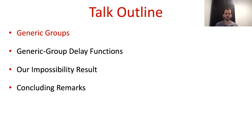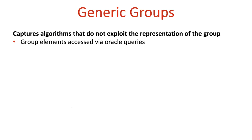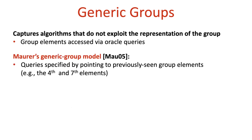So let's begin by discussing the generic group model. Roughly speaking, the generic group model captures algorithms that do not exploit the representation of the underlying group in any way. This is captured via an oracle that manages the access of algorithms to the group. Concretely, we use the generic group model of Maurer. In this model, group elements do not have unique explicit representations, and instead algorithms specify their queries by pointing to the relevant group elements. So for example, an algorithm may ask the oracle to apply the group operation to the fourth and the seventh group elements that appeared in the computation so far.